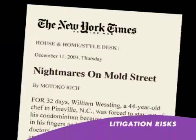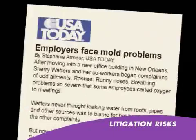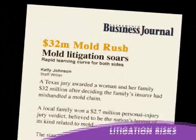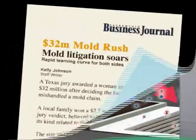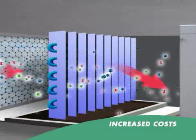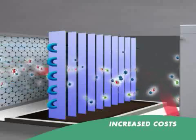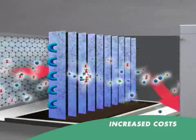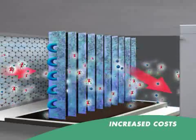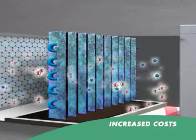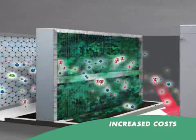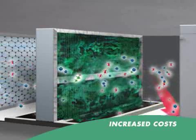Lawyers are litigating mould problems like they used to litigate asbestos. Increased operating costs are caused by the mould covering and blocking the spaces between the heat exchange plates, requiring regular cleaning and increased energy consumption.